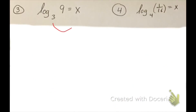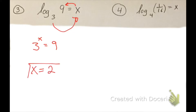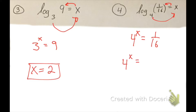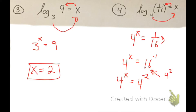Question 3: 3 to the x is equal to 9. What does x have to be to make 3 give 9? Well, 3 squared is 9, so x is equal to 2. Number 4: 4 to the x is equal to 1 over 16. I rewrite as 4 to the x equals 16 to the negative 1, and since 4 squared is 16, I have 4 to the x equals 4 to the negative 2. Since my bases are the same, my exponents must be equal, so x is equal to negative 2.